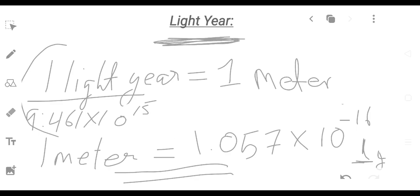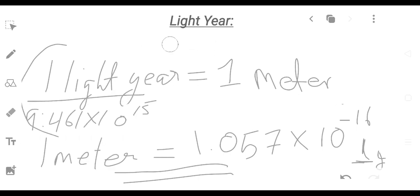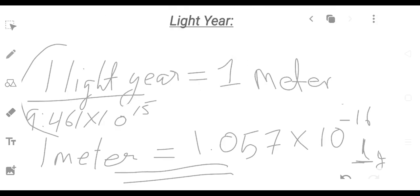So light year is a unit of distance. One light year equals 9.461 × 10 to the power 15 meters. One meter equals 1.057 × 10 to the power minus 16 light years.